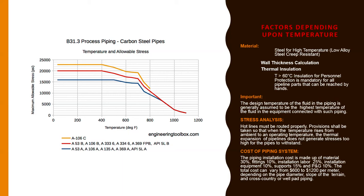The cost of a piping system installation is made up of: material 30%, fittings 10%, installation labor 25%, installation equipment 10%, supports 15%, and P&ID 10%. The total cost can vary from $600 to $1,200 per meter. The charts show the maximum allowable stress range from 0 to 25,000 psi and temperature from 0 to 1,200°F, illustrating the relationship between temperature and allowable stress of the piping.